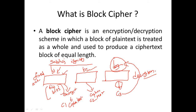Block cipher is all about taking the message, breaking it down into blocks, and applying an encryption strategy such that each block is converted to a block of ciphertext. Keep in mind: if the block size is 64 bits, the ciphertext block will also be 64 bits. Whenever you use an encryption or decryption strategy, you will also use a key.